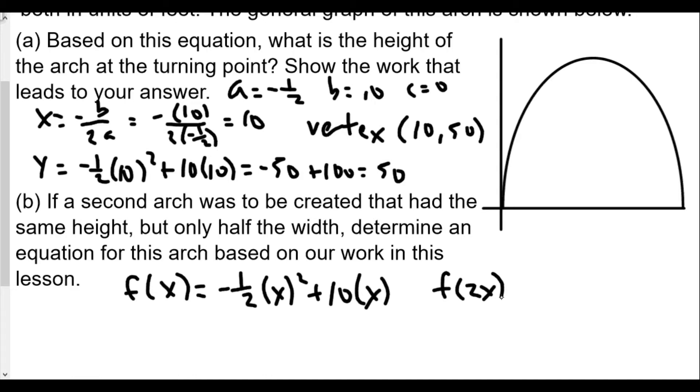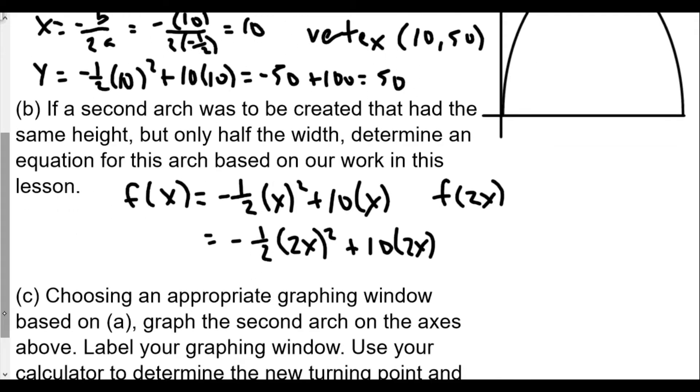And so now one way to look at this is I can factor out everything. But the idea is that with 2x, we're going to have here negative 1 half times 2x squared plus 10 times 2x. Now we'll work this out. And now 2x times 2x is 4x squared times negative 1 half would be negative 2x squared. Because negative 1 half times 4 is negative 2x squared. And this would be plus 20x.